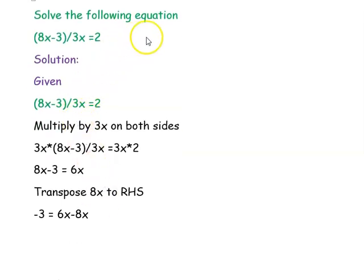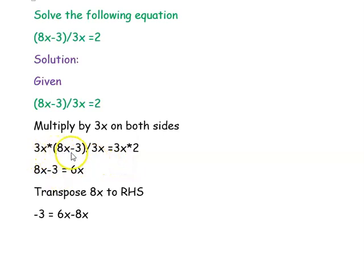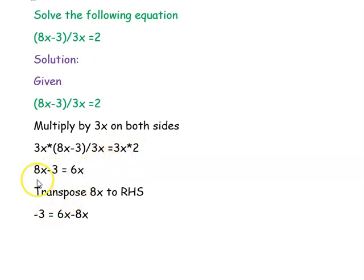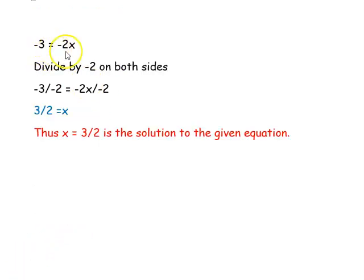Next question: solve (8x − 3)/(3x) = 2. We multiply both sides by 3x to remove the denominator: 3x × (8x − 3)/(3x) = 3x × 2. The 3x terms cancel, leaving 8x − 3 = 6x. Transposing 8x to the right-hand side: −3 = 6x − 8x = −2x.